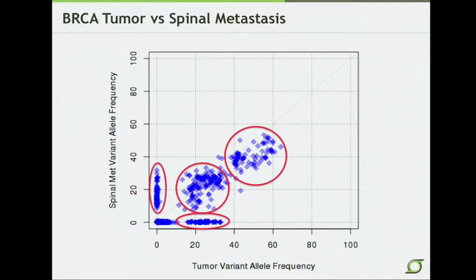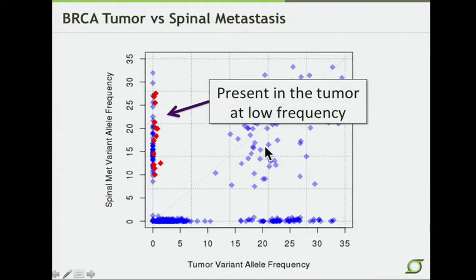When we zoomed in closer to the Y-axis, what we can see is that the events highlighted in red actually were present in the tumor, just at a very low frequency. That suggests that they either had a growth advantage in the environment of the metastasis, or just made up a majority of the cells that split off into the metastasis. Either way, they're clearly present. This gives us a source of very low-frequency variants in this tumor that we know are real because they're also present in the metastasis.